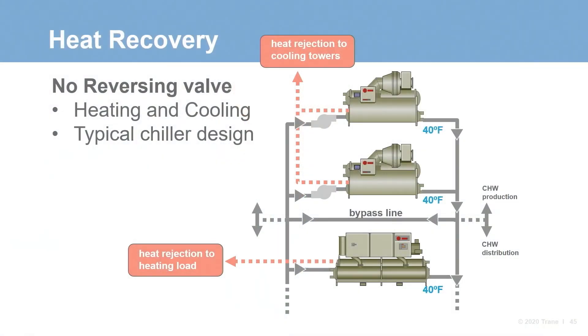The piping layout shown here will be considered preferentially loaded. This means that the heat recovery chiller needs to make the system chilled water temperature because it is sending it directly to the load. In this case, we get what we can get out of the condenser side for heat. Heat recovery chillers can come in numerous sizes, configurations, and compressor technologies. In these examples, we are focusing on water-cooled heat recovery chillers.